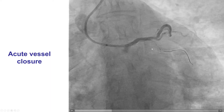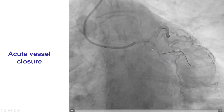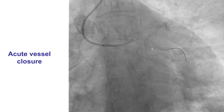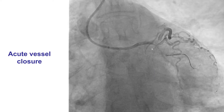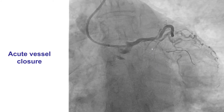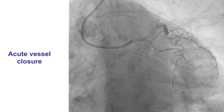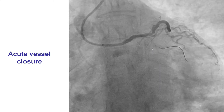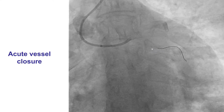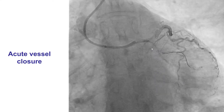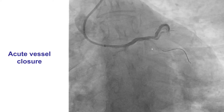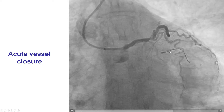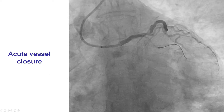When this happens, the first thing is to determine the cause. In this particular case, it was fairly obvious that the reason was likely traumatic dissection, given the previous attempts to deliver equipment to that area of stenosis. However, other causes include spasm, thrombus, and distal embolization with no-reflow. In our case, it was fairly obvious that the cause was dissection.